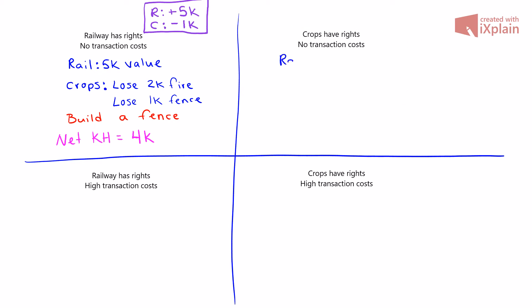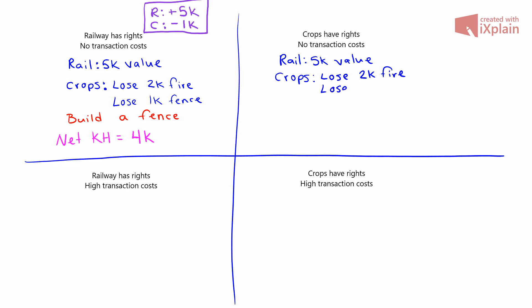Now looking at situation two, where the crop owners have the rights to not having fires from the sparks from the train, and again we have no transaction costs. The setup is exactly the same: the railway gets $5,000 in value from operating, and the crops, if they catch fire, lose $2,000, or it's $1,000 to build a fence.